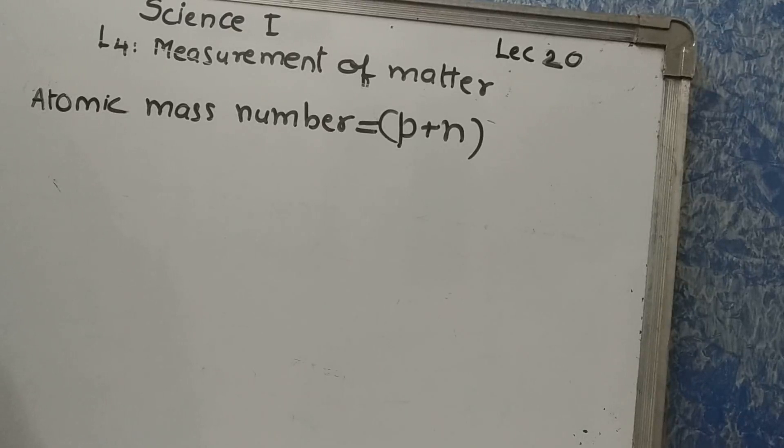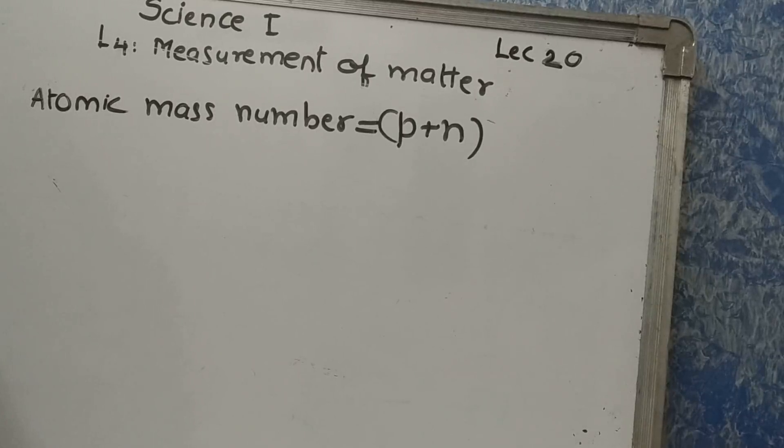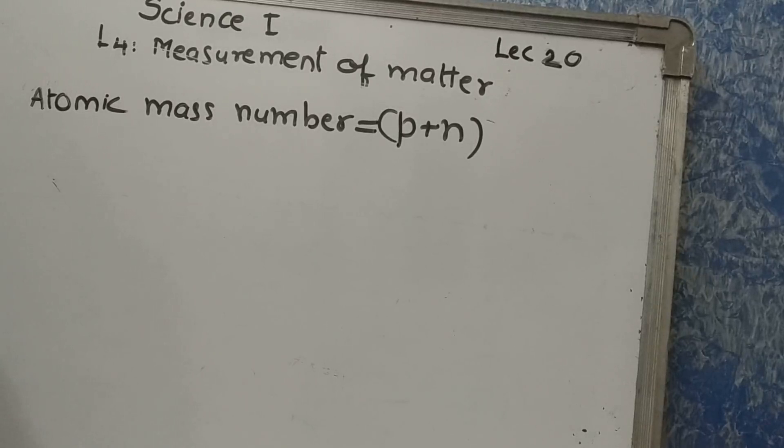This is how the relative masses of various elements were determined. On this scale, the relative atomic masses of many elements came out to be fractional. Therefore, for some time, different atoms were chosen as reference atom.